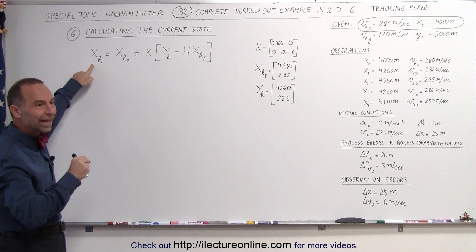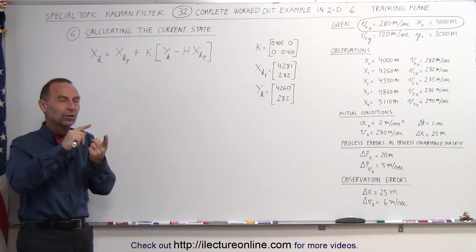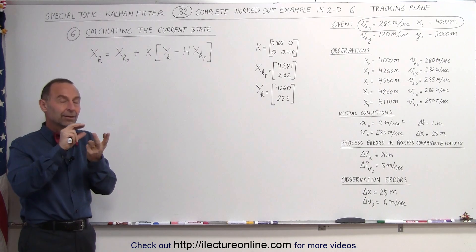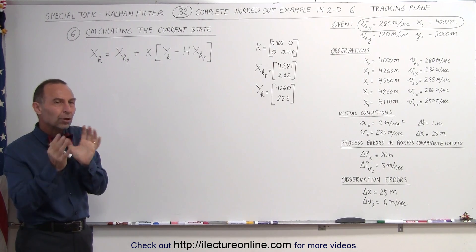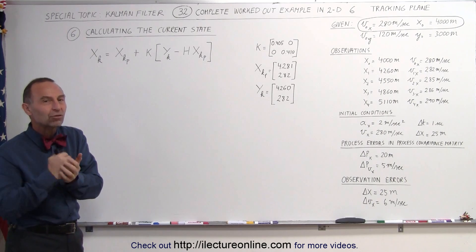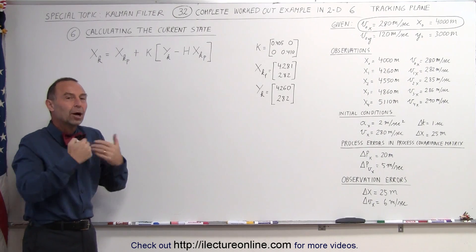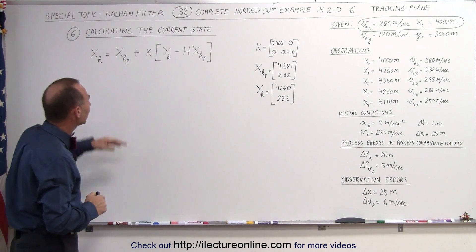Now we're ready to put it all together and calculate the new current state. So that will be a combination between the predicted state, the measured values, the covariance matrix, and then the Kalman gain to determine how much of the new measured values we should consider in updating the current state.